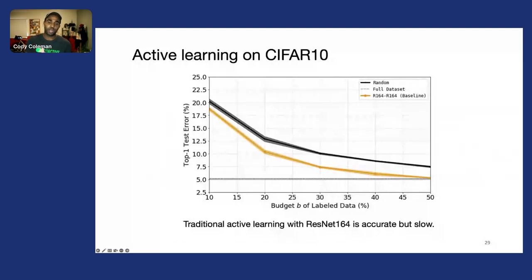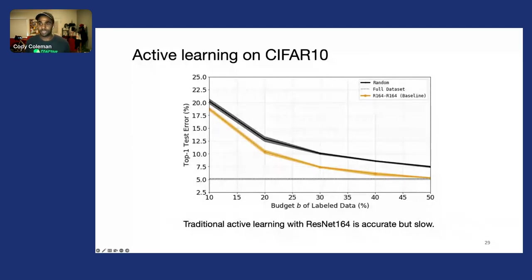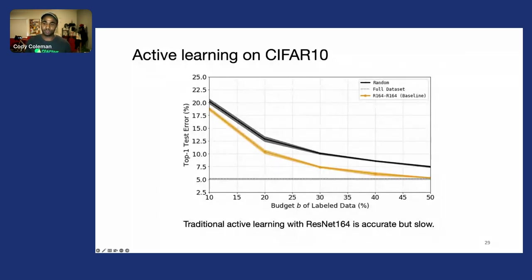The dashed gray line represents the performance we get training on the entire dataset. The black line represents what we get if we just take a random subset of a certain percentage of data.